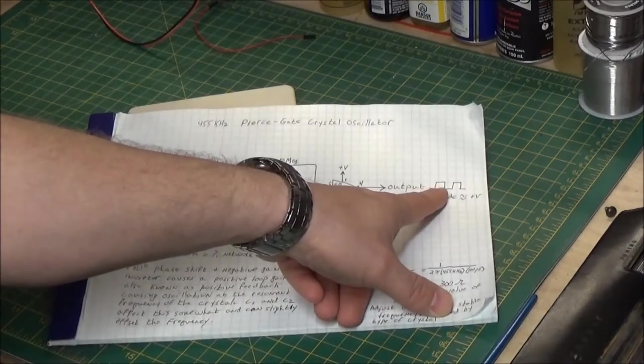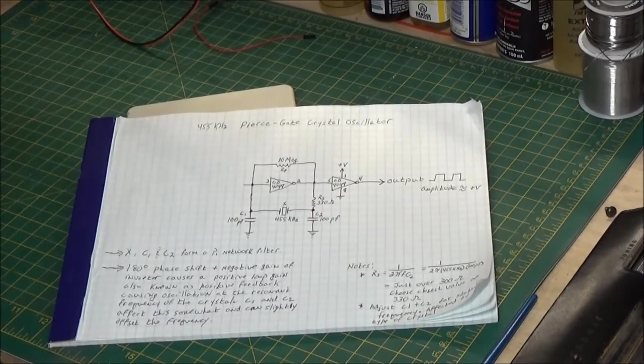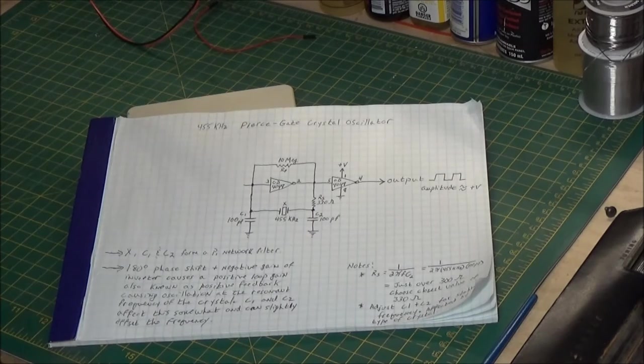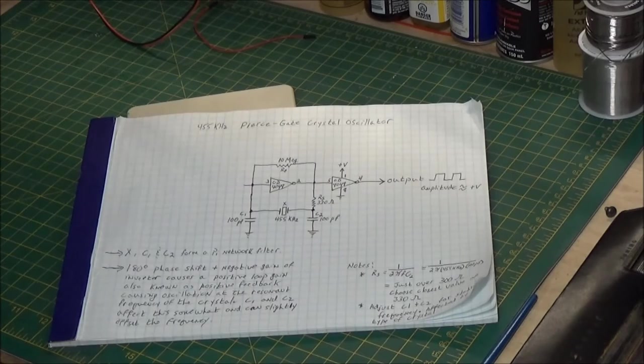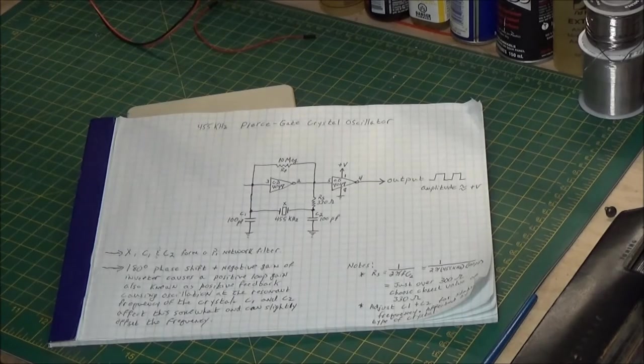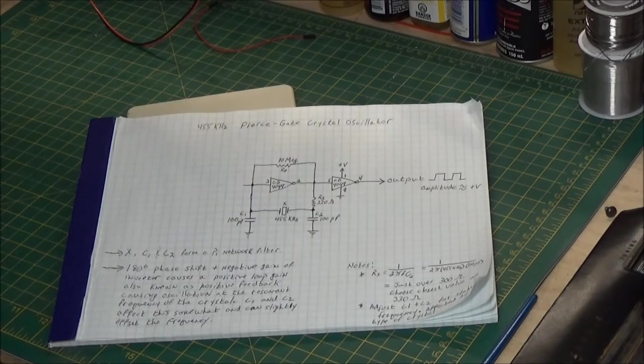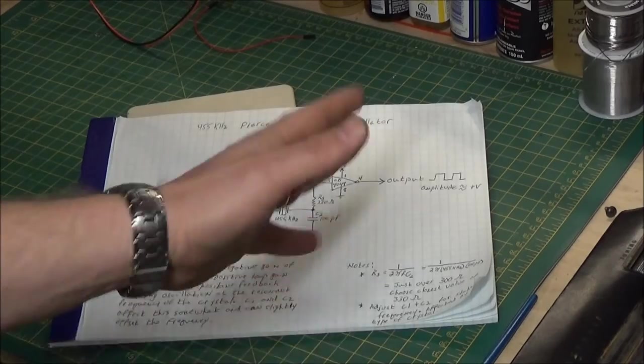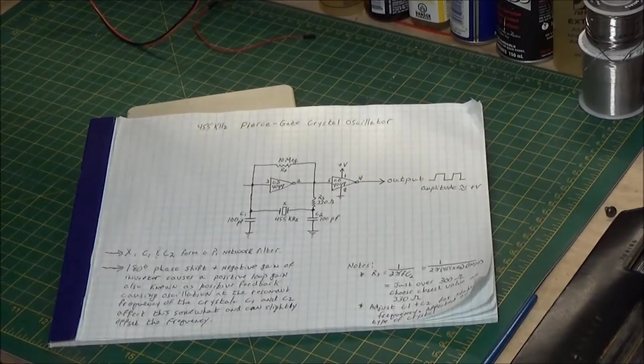One of the downsides is you probably are going to get harmonics. You can put some filters on here to change that. But for what we're doing, an all-American 5 AM tube radio and tuning a 455 kilohertz IF coil, we don't really worry about those things. The old signal generators had harmonics, this will have harmonics, it's not going to make a difference. Your fundamental frequency is going to be 455.